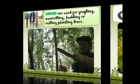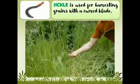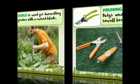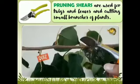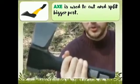Sickle. It is used for harvesting grains with a curved blade. Axe. It is used to cut and split bigger posts.